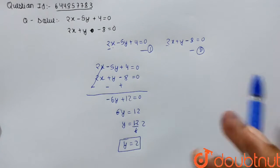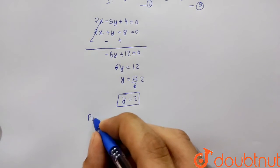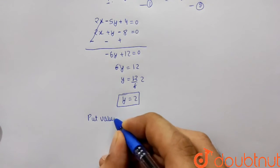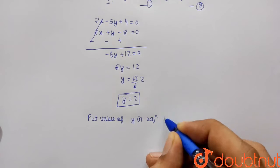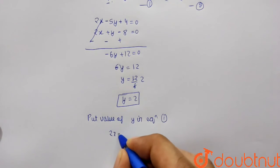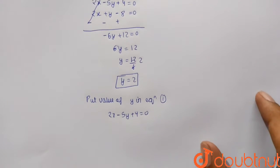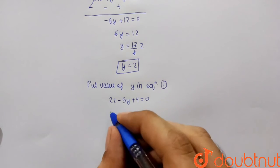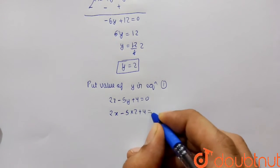So we can put value of y in any of this equation and get the value of x. Put value of y in equation 1. So what was equation 1? 2x minus 5y plus 4 equals 0. We have y as 2, so this will become 2x minus 5 into 2 plus 4 equals 0.